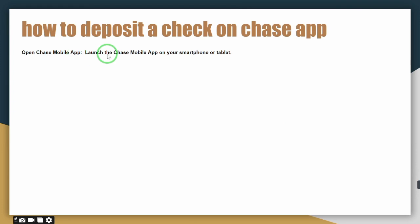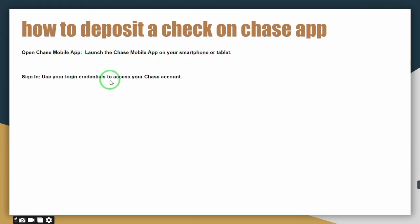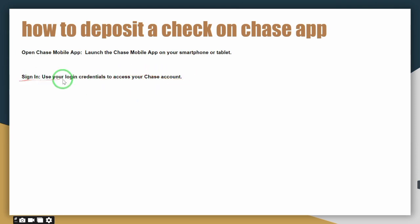The first step you have to follow is open the Chase mobile app and log in. After logging in or signing up, the third step you have to do is find the deposit option.